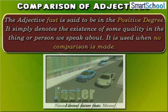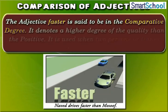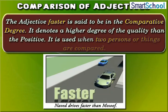The adjective faster is said to be in the comparative degree. It denotes a higher degree of the quality than the positive. It is used when two persons or things are compared.